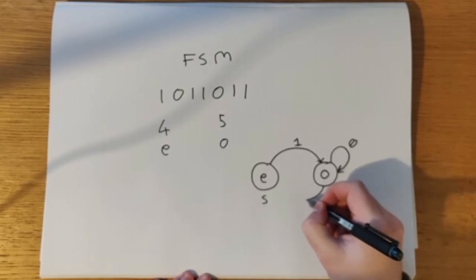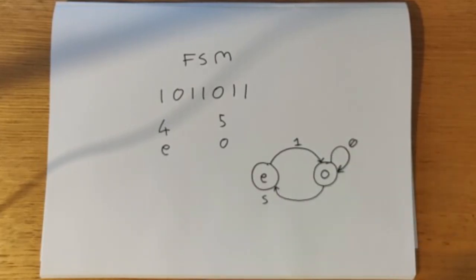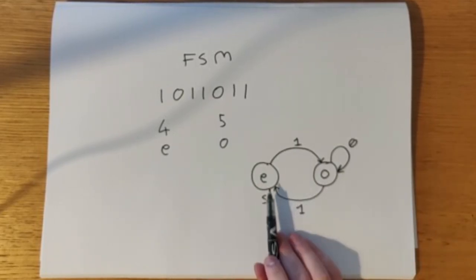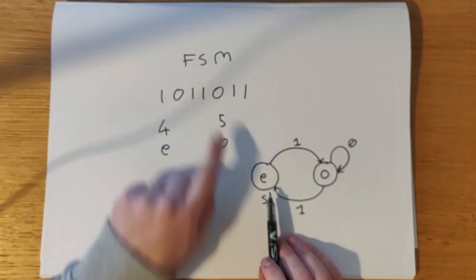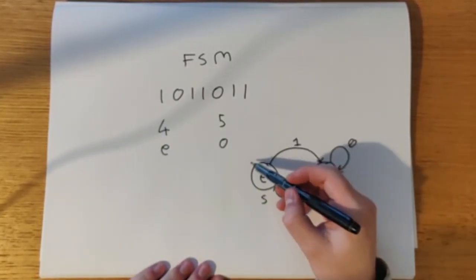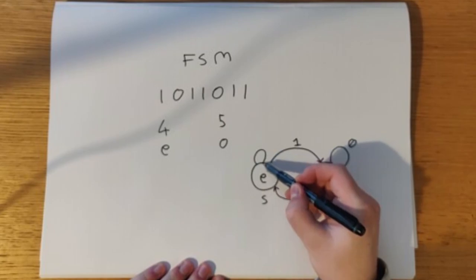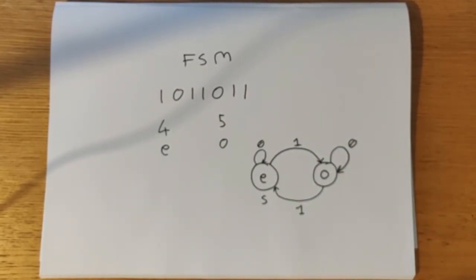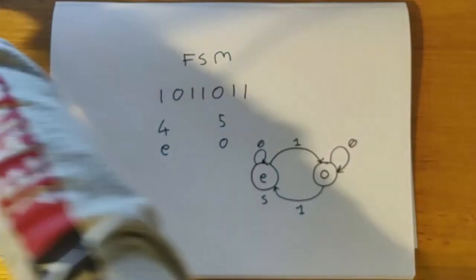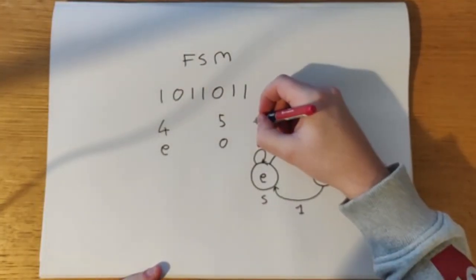Which means we have to move back into the even state because 2 is an even number. And again, the same happens with even. If we come across a 0 and we're in the even state, we just remain there because 0 is not important to our calculation. And we have actually finished our finite state machine.